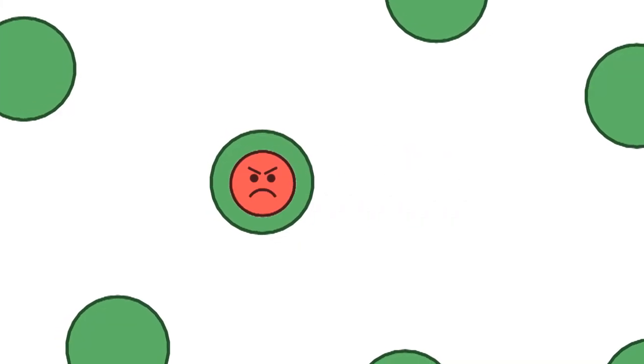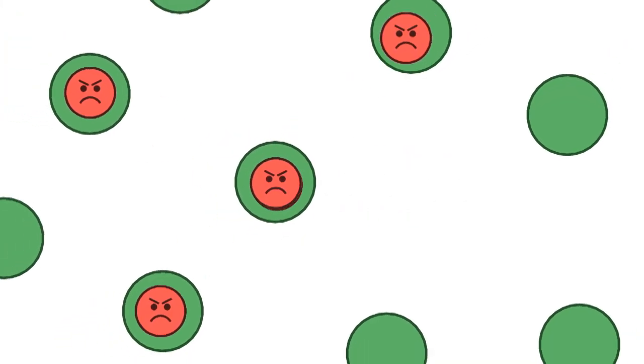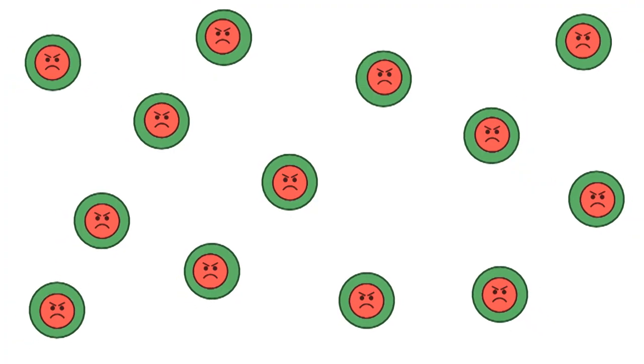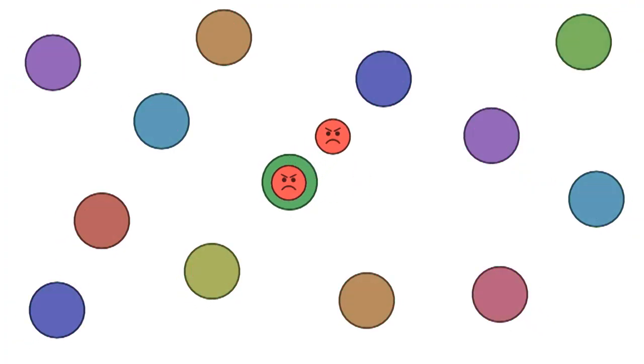Another theory is that variation is good at fighting diseases and parasites. Parasites can easily attack genetic clones. They're all the same. They have the same weaknesses. But they're much harder to attack when they're all different, when they have many different defense mechanisms.